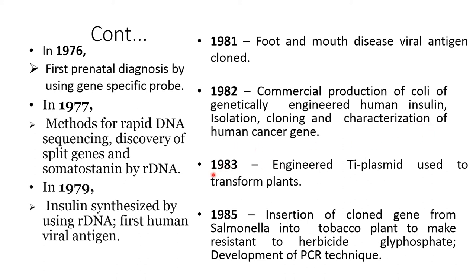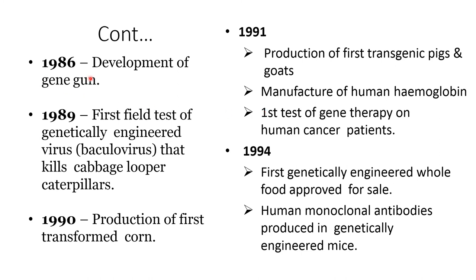In 1983, an engineered Ti plasmid was used to transform plants. In 1985, a cloned gene from Salmonella was inserted into a tobacco plant to make it resistant to the herbicide glyphosate. Development of the PCR technique was also achieved. In 1986, the gene gun was developed.